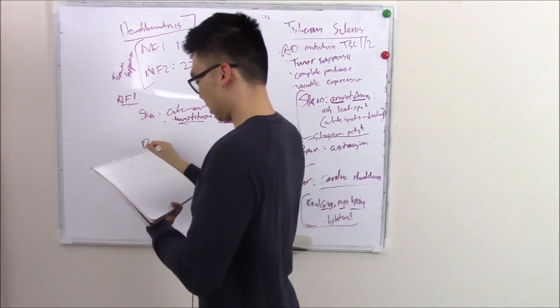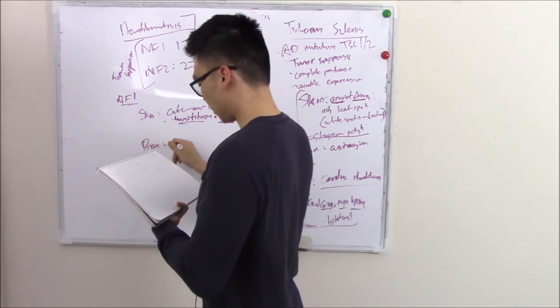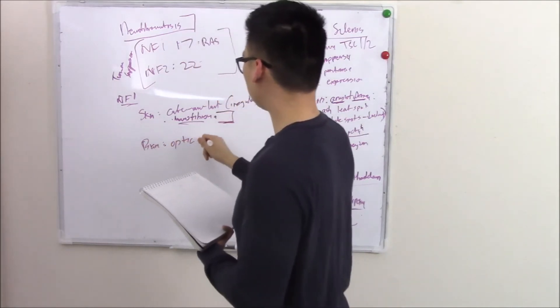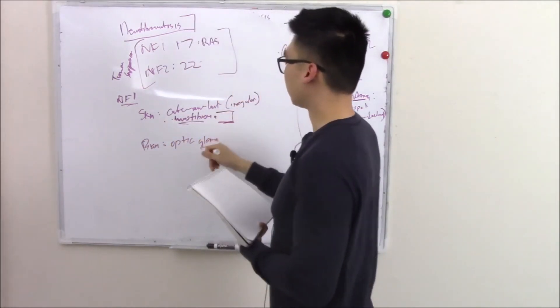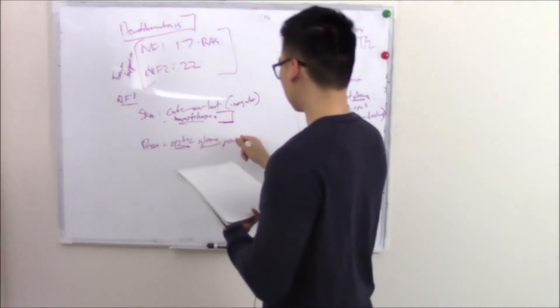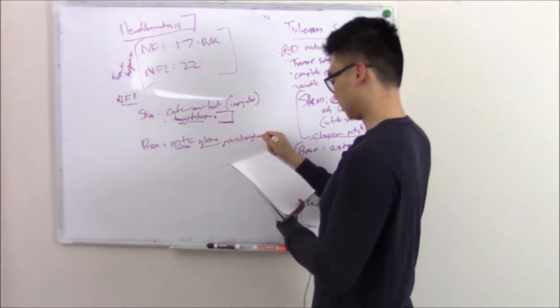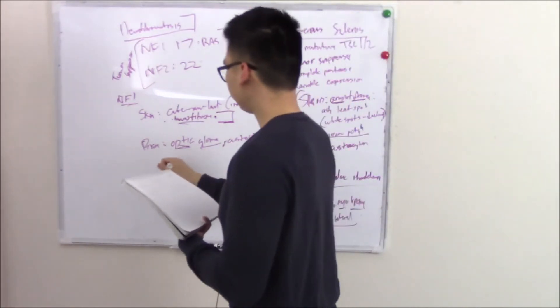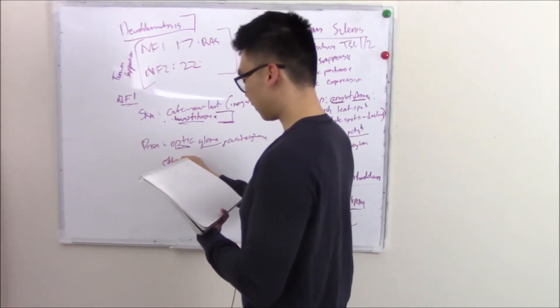That's the skin manifestation. What's the brain manifestation? In the brain, you can have optic glioma, a tumor of your glial cells that involves your optic pathway. You can also have astrocytomas.